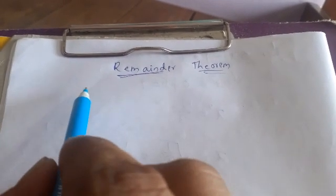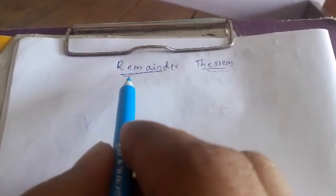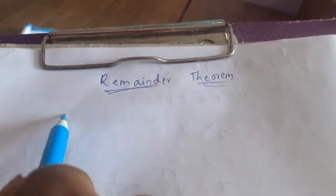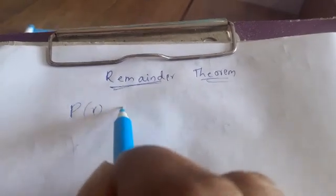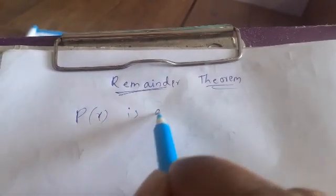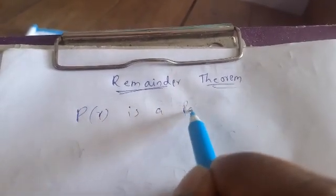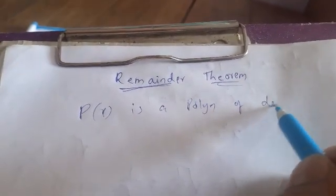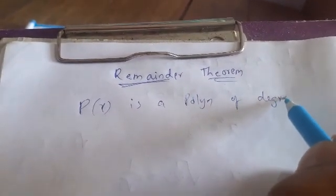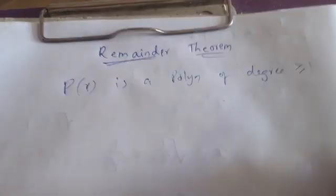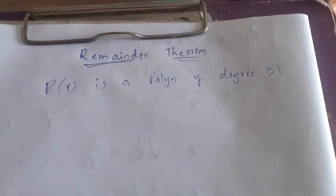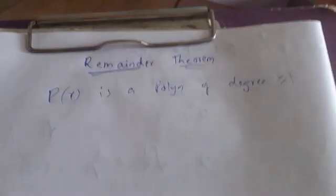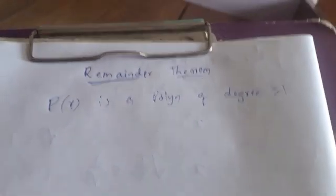Good morning students, today let us discuss the remainder theorem. P of X is a polynomial of degree greater than or equal to 1, that means P of X degree is 1 or more than 1.